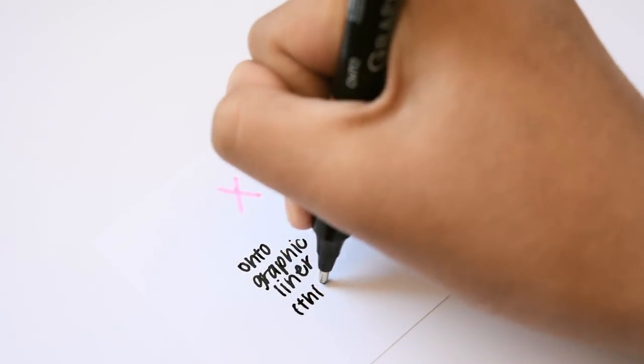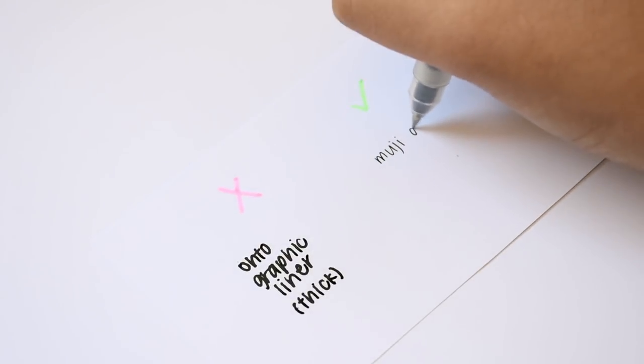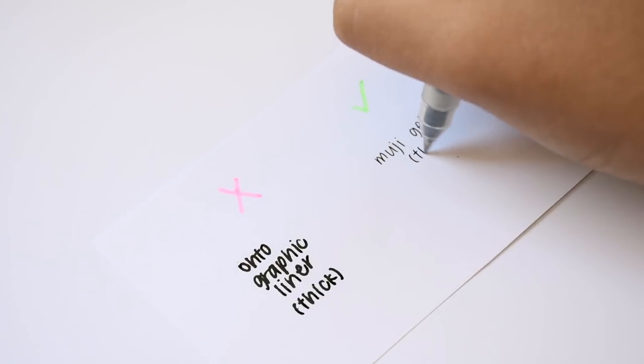If you're writing fairly large but it's still hard to read, use a pen with a finer tip. This will make each stroke clearer and it'll be easier to tell what letter the strokes form.